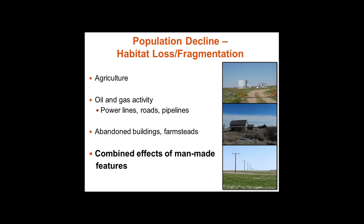It's the same story in Alberta and Saskatchewan: the primary reason for initial population decline was agricultural conversion, and remaining habitat is being fragmented by oil and gas activity with associated infrastructure like power lines, roads, and pipelines. There's also a real problem with remnants of European settlements — abandoned buildings and farmsteads dotting the landscape — which are helping predators expand into the prairies. It's really the combined effect of all these man-made features; you can't point to one single reason for the decline.